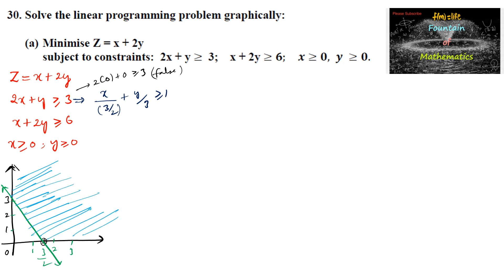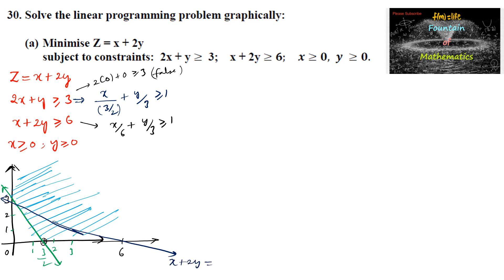For the next constraint x + 2y ≥ 6, we rewrite it as x/6 + y/3 ≥ 1, giving x-intercept = 6 and y-intercept = 3. The corresponding line passes through the points (0, 3) and (6, 0).